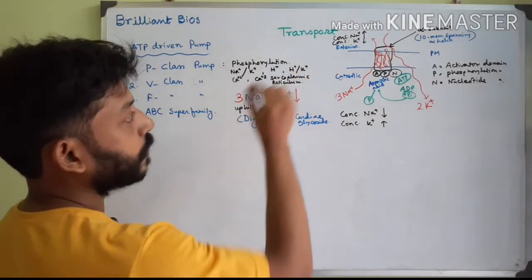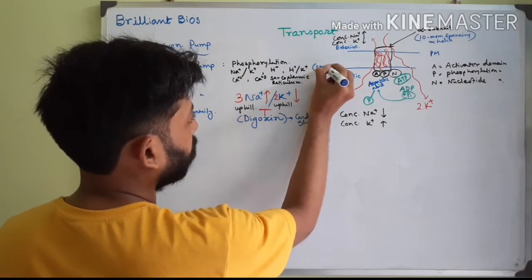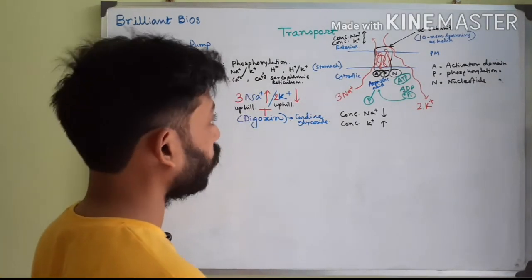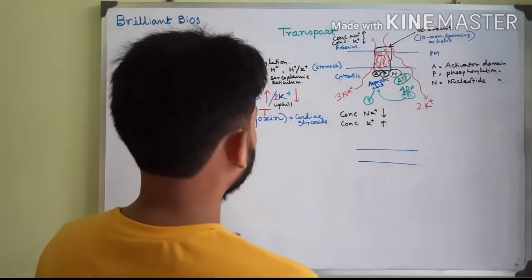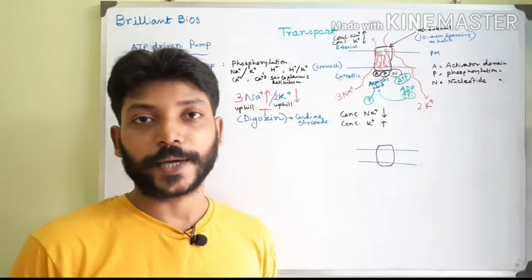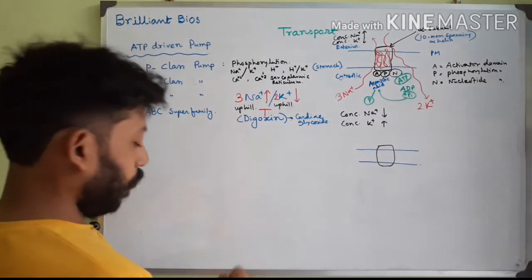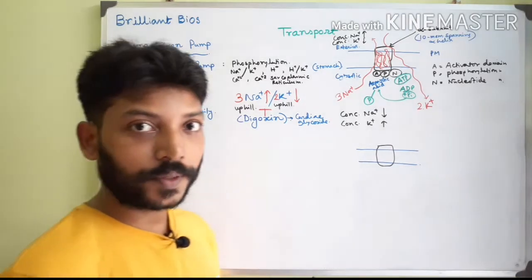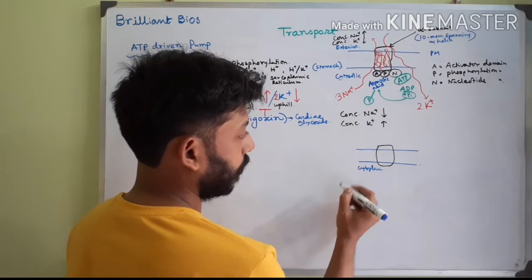The H+/K+ pump is present in the stomach. The P-class pump changes its conformation when it transports molecules. The high concentration of potassium is inside the cytoplasm, and this is relevant to how the H+/K+ pump operates in the stomach lining.